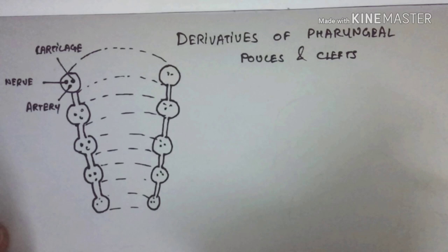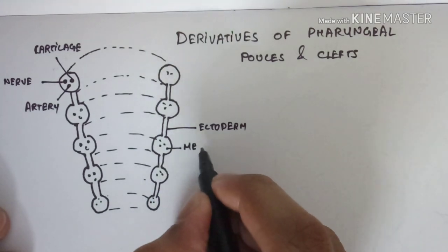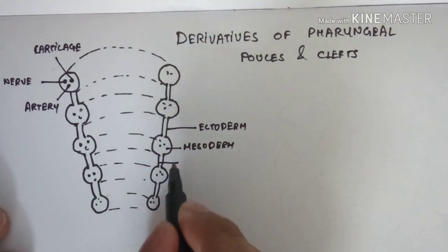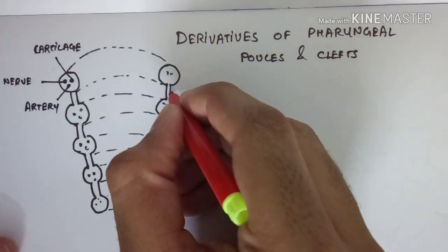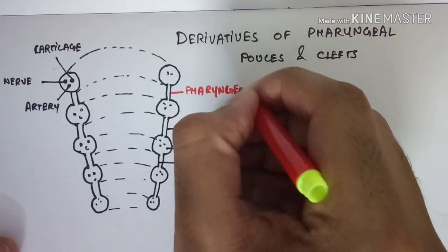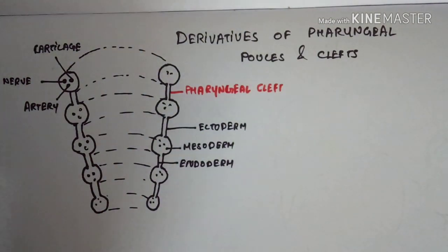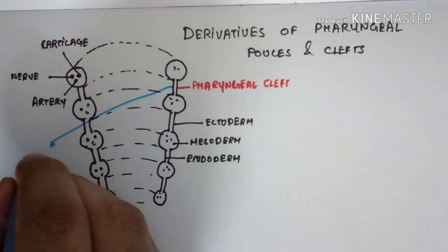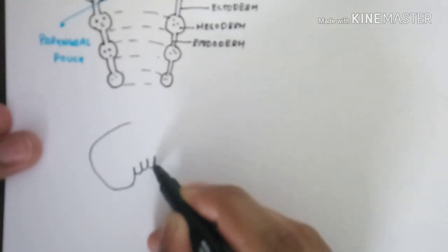Now let's see the three layers of the pharyngeal arches. The outer layer is called the ectoderm, the middle layer is the mesoderm which forms the muscles of the respective arch, and the inner layer is called the endoderm. In the panel lines between the arches, the outer side is called the pharyngeal cleft — first, second, third, and fourth — and the inner side is called the pharyngeal pouch — first, second, third, and fourth. The middle portion between them is called the pharyngeal membrane.